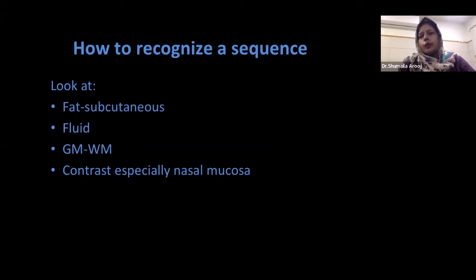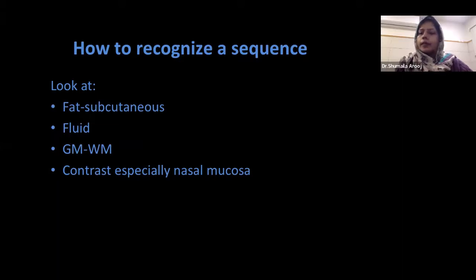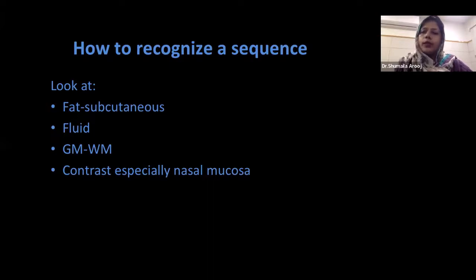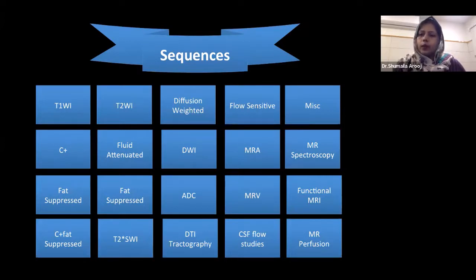How to recognize the sequence? As discussed in previous lectures, you have to look at three to four structures: the fat in the subcutaneous tissues, the fluid-containing structures in the brain such as ventricles, the CSF in the thecal sac or spinal canal, and the gray matter and white matter in the brain. To differentiate a plain T1-weighted image from a post-gadolinium T1-weighted image, look at the nasal mucosa. If it is enhancing, it is a contrast image; if not, it is a plain T1-weighted image. There are a multitude of sequences and more are being added as technology advances, but we still make our decisions on the basis of the core images.